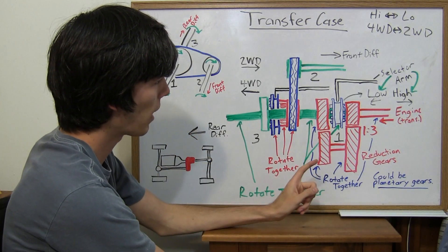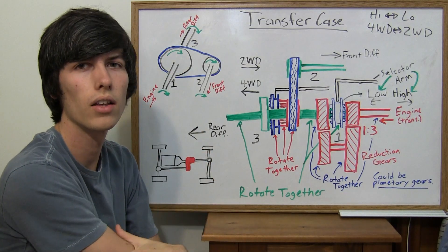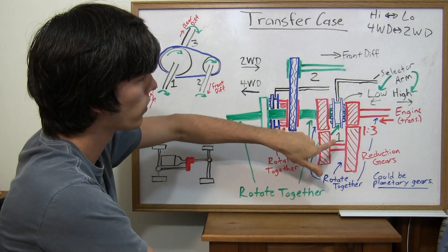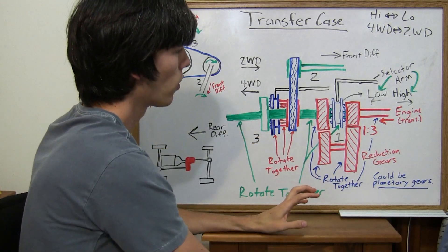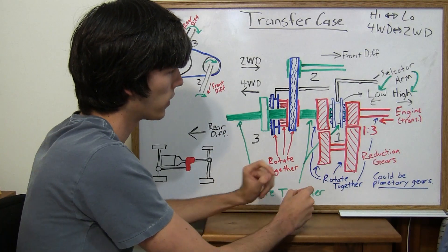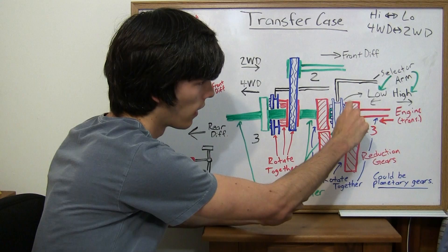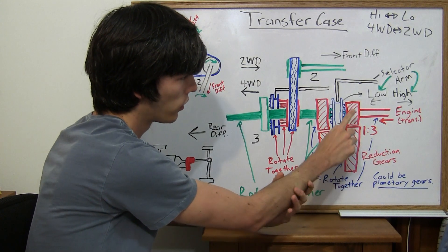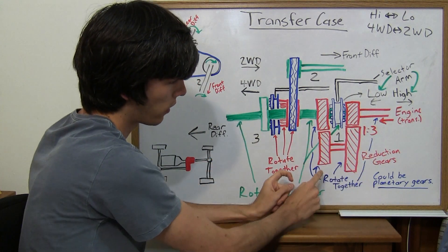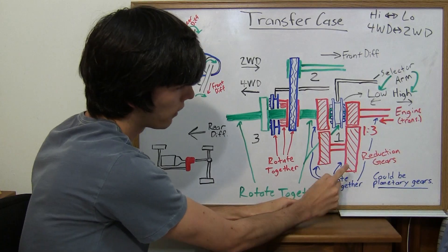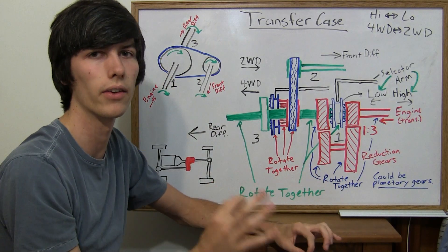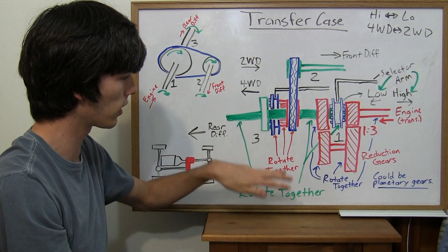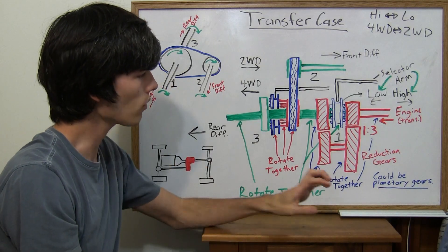So how does it switch from high to low gear? It's actually a lot like a manual transmission switches between gears. You've got this collar here, and I'm going to point out which things rotate together. Everything in red here is rotating together — all the blue arrows point to things that rotate together, and likewise the green arrows and red arrows all point to things that rotate together.